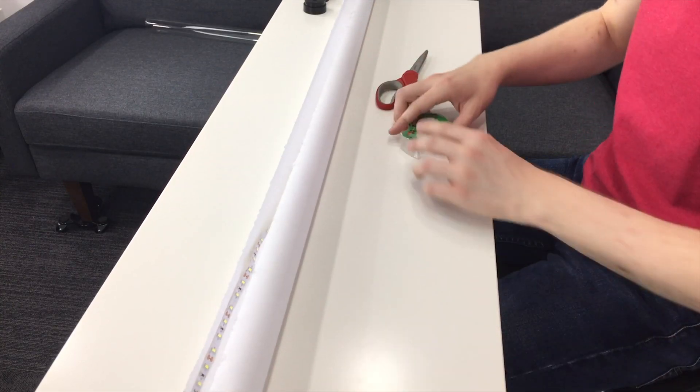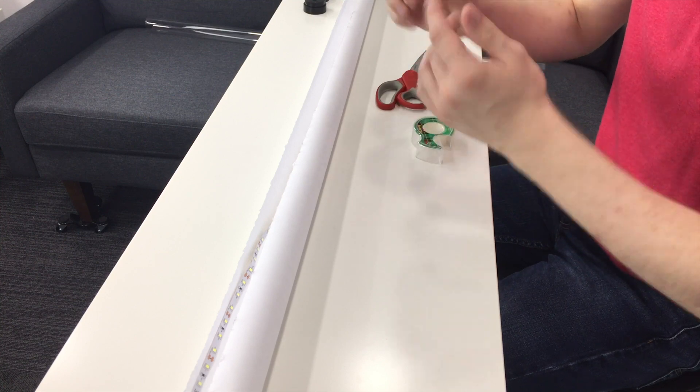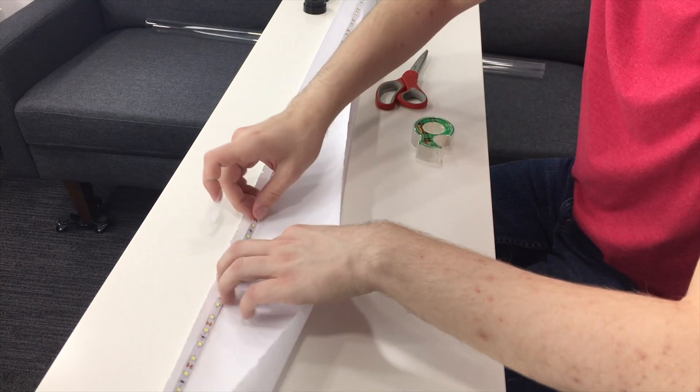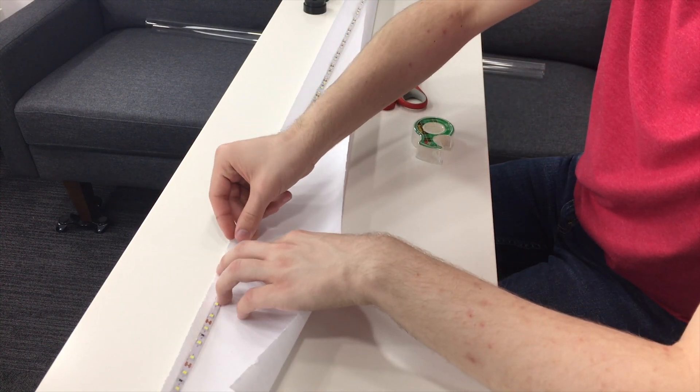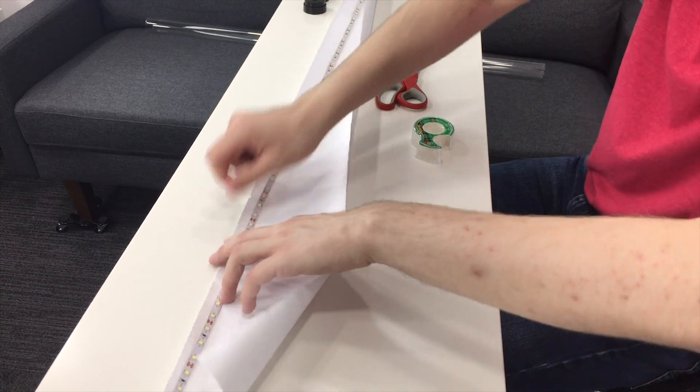So what we want to do is tape this pretty much as close to the edge as possible. Just like that. And then we'll continue taping this all the way down the rest of the side of the piece of paper.